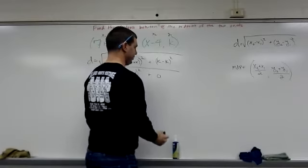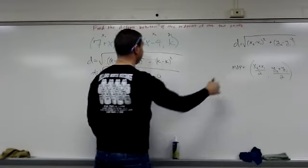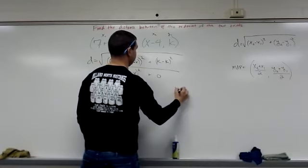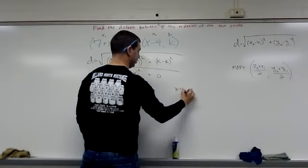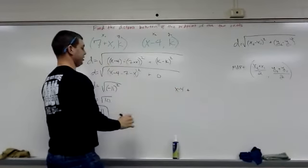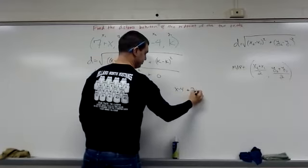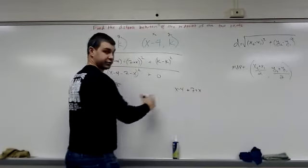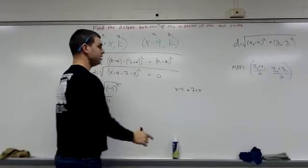The midpoint formula, if I do that, this is going to be x2 plus x1, so x minus 4 plus x1, 7 plus x. I do not need parentheses on this because addition is commutative, I can go forward and backwards, it does not matter.